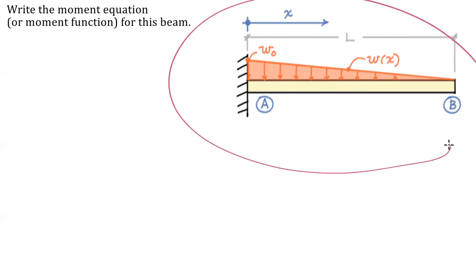We have a cantilever beam carrying a load that I usually refer to as a tricky triangle. Basically we have a linear function with a peak intensity at the fixed support and at the free end we have a load intensity of zero.